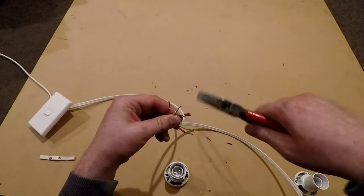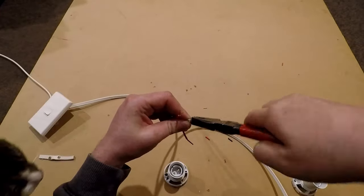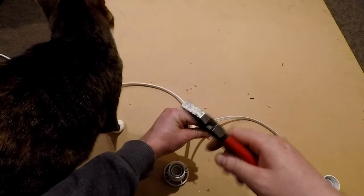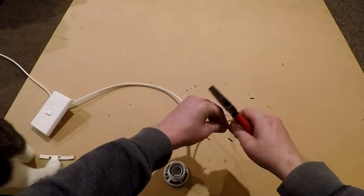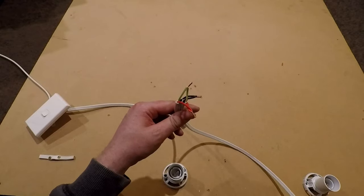Looks like the apprentice has come to give me a hand. All right, now once you've twisted all the corresponding colors together, we're going to want to fit this batten holder back on.